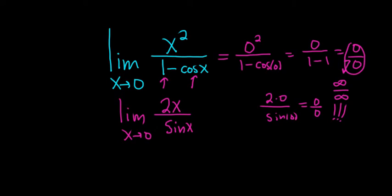So now what we can do is we can use L'Hopital's again. So this is the limit as x approaches 0. The derivative of 2x is 2, and the derivative of sine x is cosine x.